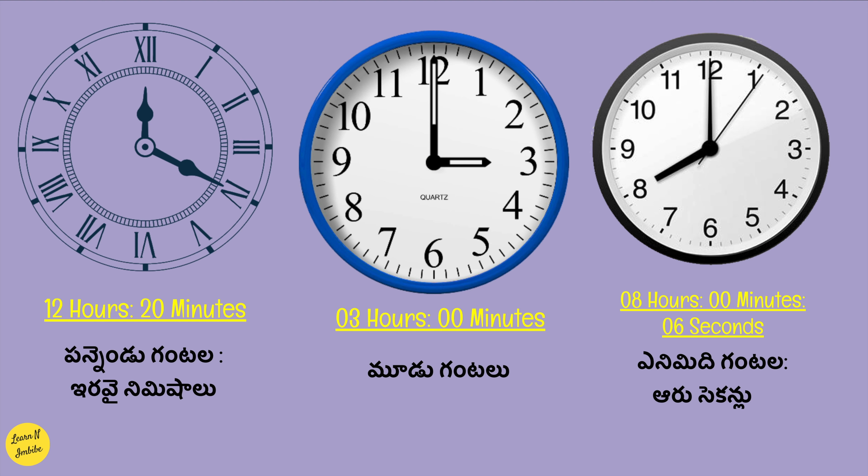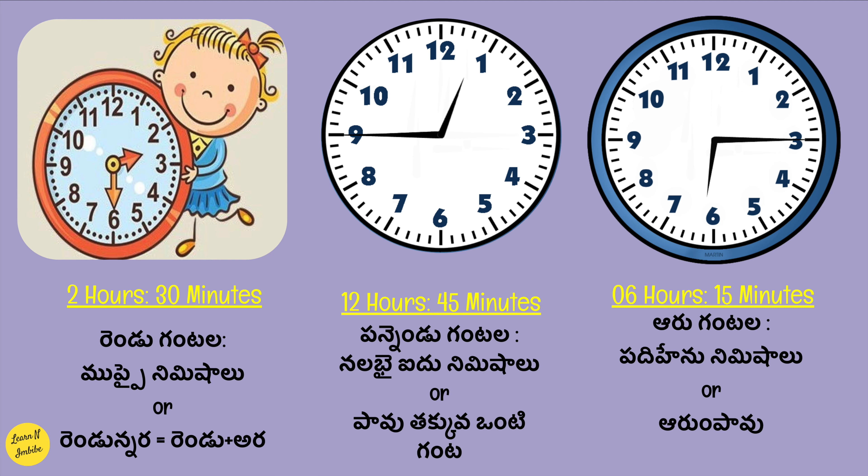In the first clock the time is 12 hours 20 minutes, read in Telugu as panndu gantala iravai nimishalu. In the second clock, the time is 3 hours 0 minutes, simply called 3 o'clock, or mudu gantalu in Telugu. In the third example, the time is 8 hours 0 minutes 6 seconds, called inimidhi gantala aru secondlu — since minutes is 0, you need not include it. 2 hours 30 minutes is called rendu gantala muppai nimishalu, or simply rendu naragantalu.